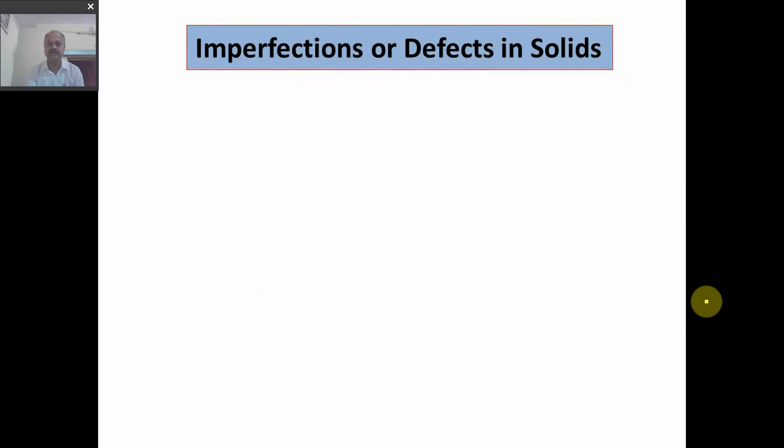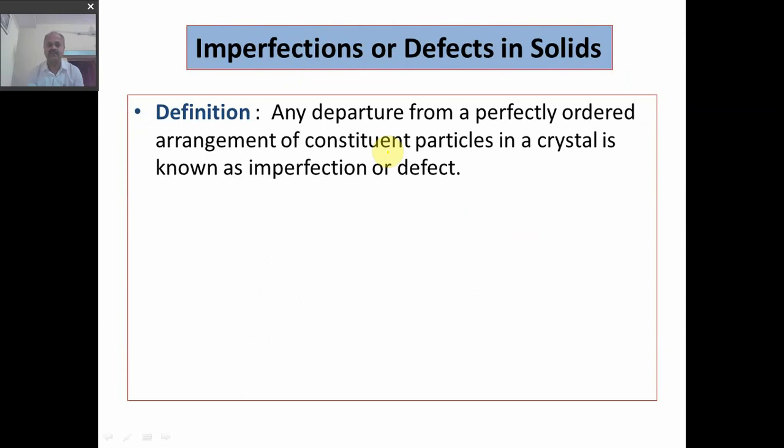Let us start with imperfection or defects in solids. Definition: any departure from a perfectly ordered arrangement of constituent particles in a crystal is known as imperfection or defect. In any solid, the constituent particles have a well-ordered arrangement.